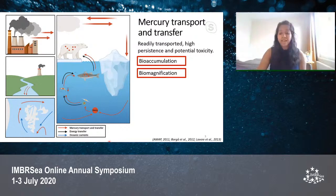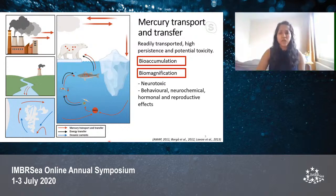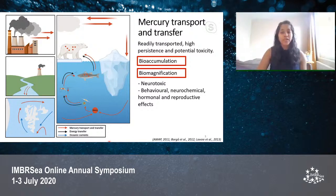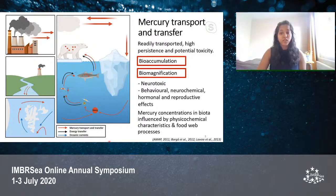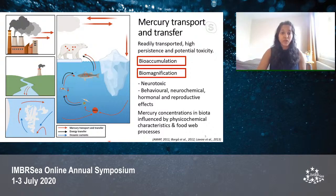This has led to these organisms having neurotoxic, behavioral, hormonal, and reproductive effects. In general, mercury concentrations in biota are influenced by physicochemical characteristics like pH and dissolved organic carbon, and food web processes like trophic relationships and species diversity. In our study, we focused on food webs with a specific focus on fishes.